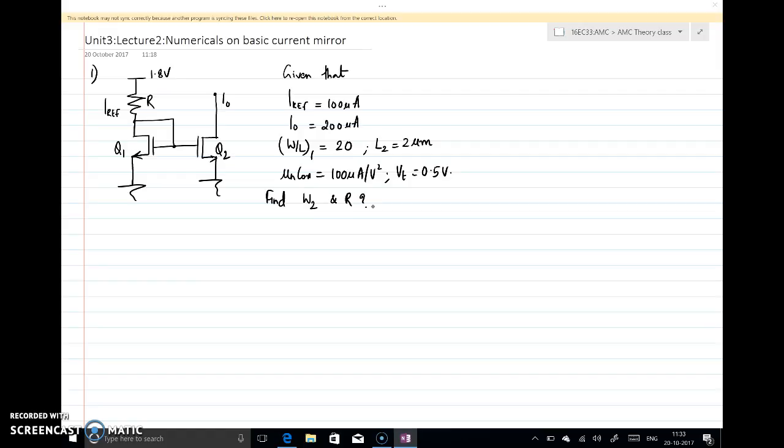By looking at the circuit we know that this is a current mirror circuit. We studied in last class that the current Inot - or we have written in last class Id1 and Id2 - Inot by Iref is equal to W by L of 2 divided by W by L of 1. This is what we discussed in last class.